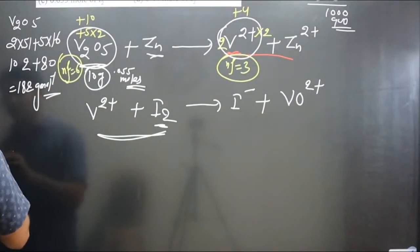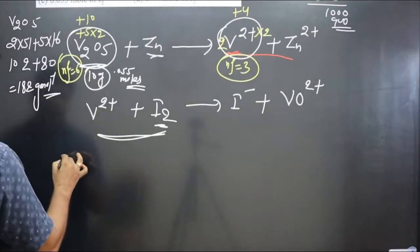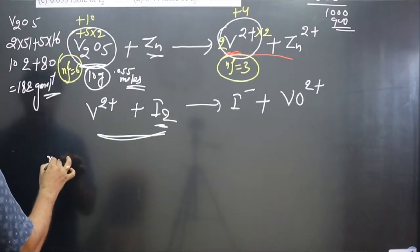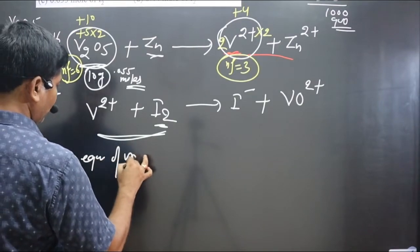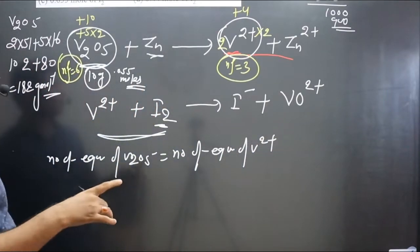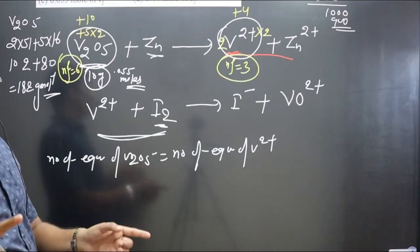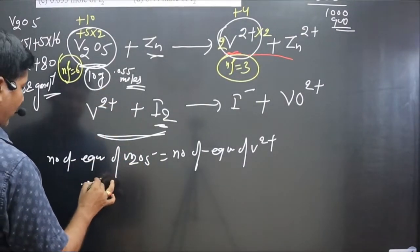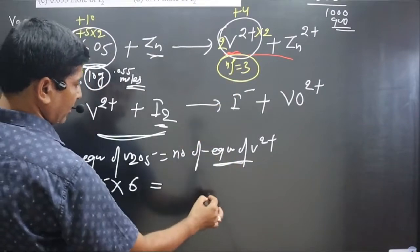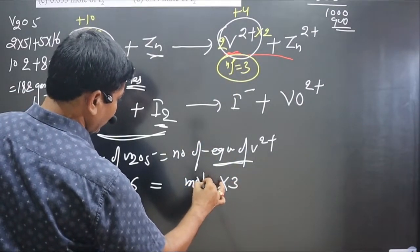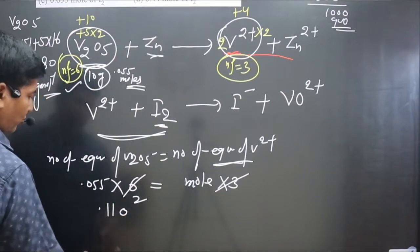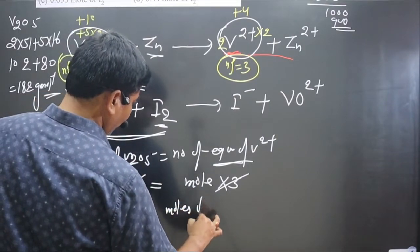Equating equivalences: equivalence of V2O5 = equivalence of V²⁺. Number of equivalences = moles × N-factor. So 0.055 × 6 = moles of V²⁺ × 3. Solving: moles of V²⁺ = 0.055 × 6 / 3 = 0.11 moles of V²⁺.